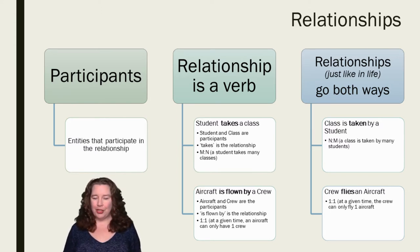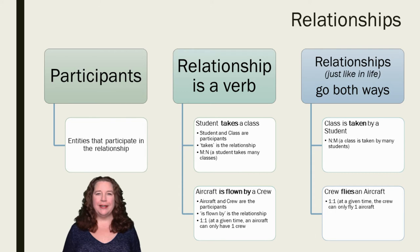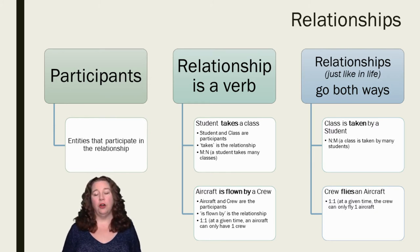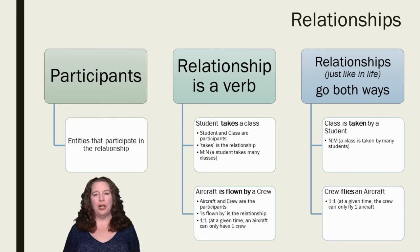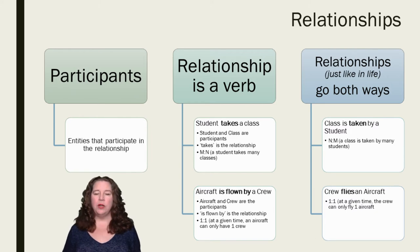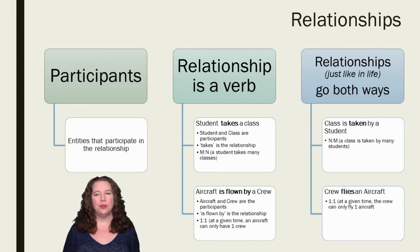Remember it goes the other direction too, just like real life — relationships are not one-sided. If a student takes a class, then a class has to be taken by a student. If an aircraft is flown by a crew, then the crew flies an aircraft. They have to go both ways. So we can have our relationship verb, and it might change a little bit — takes and is taken by. One goes one direction, one goes the other, and recognizing that directionality is important. The relationship is not always a singular verb.